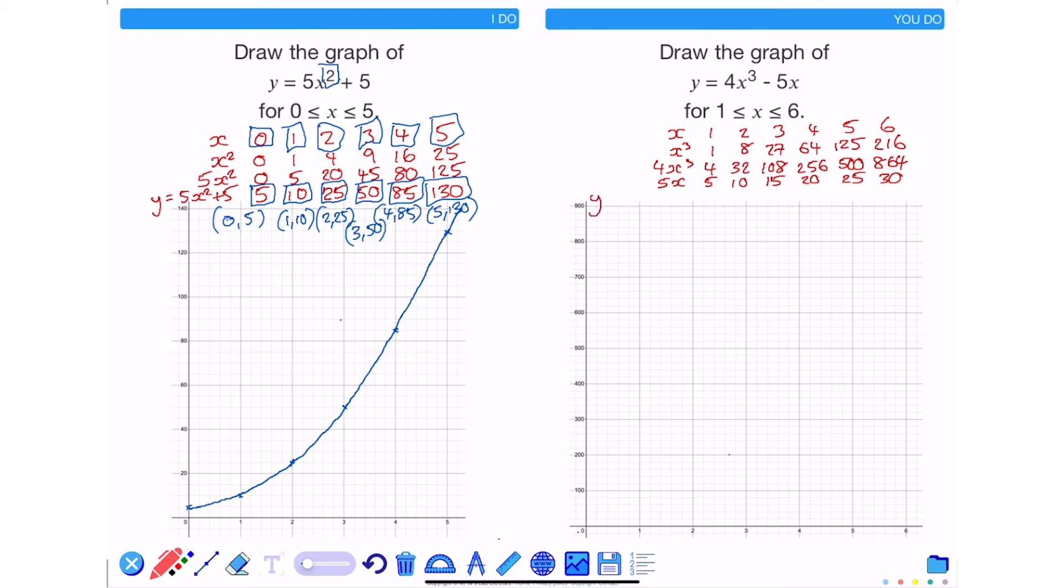To find y, I do 4x cubed take away 5x. This will then give me 4 take away 5 is negative 1, 32 take away 10 is 22, 108 take away 15 is 93, 256 take away 20 is 236, 500 take away 25 is 475, and finally 864 take away 30 is 834.